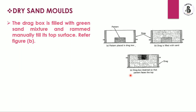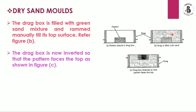The drag box is then filled with the sand mixture and rammed manually to its top surface. The sand fills the drag and surrounds the pattern with green sand. After this, the drag box is inverted so that the patterns are now on the top side.